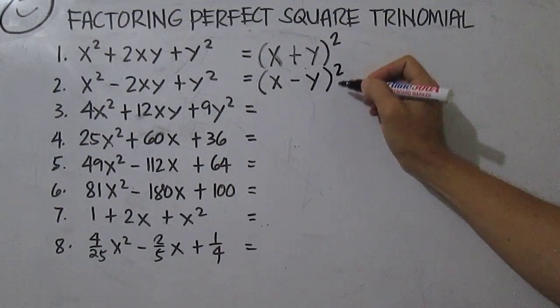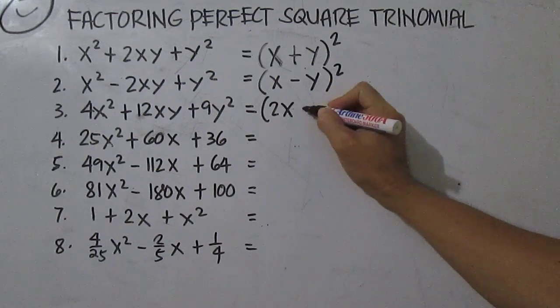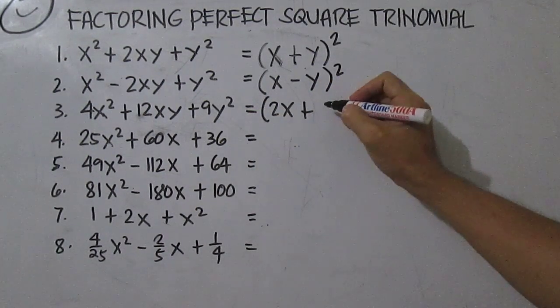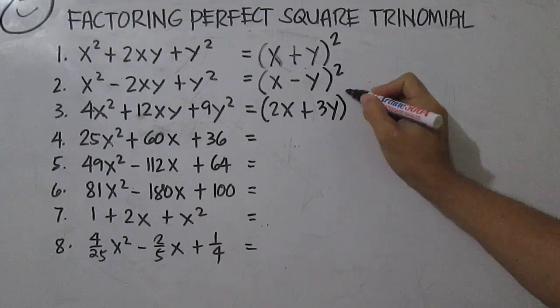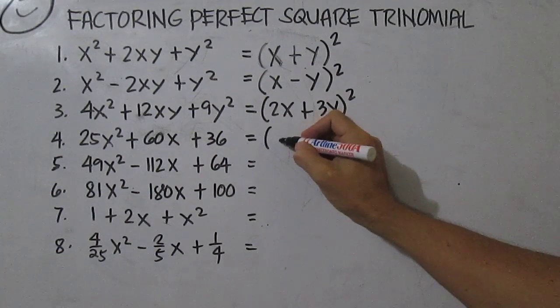y squared. For number three, the square root of 4x squared is 2x, plus the square root of 9y squared is 3y, then squared.